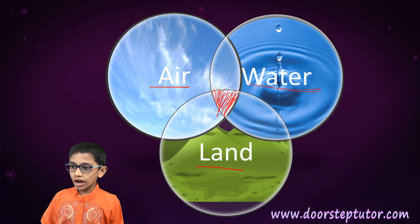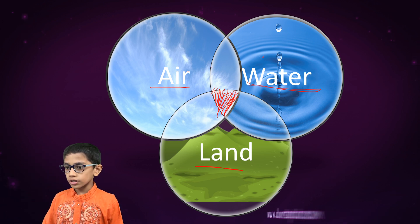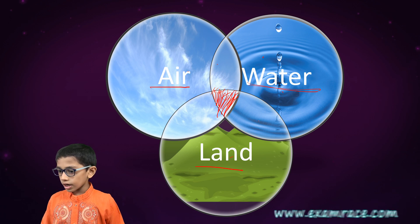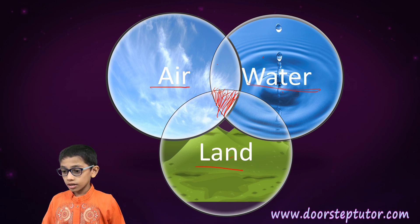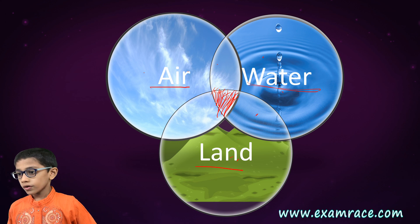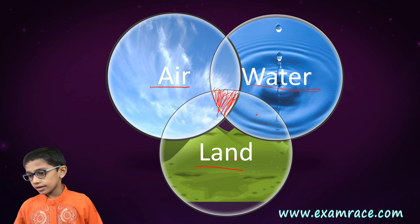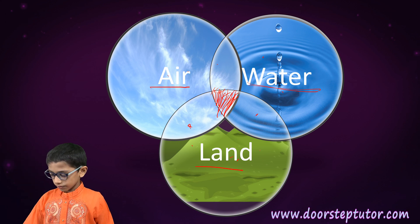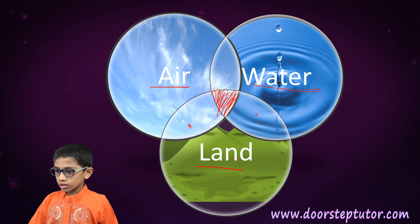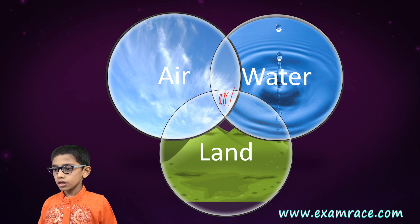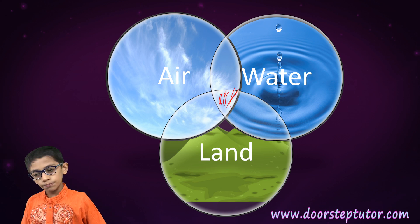If there is only air and water, there is no life. If there is only water and land, there is no life. If there is only air and land, there is no life. Life only exists where all three — atmosphere, hydrosphere, and lithosphere — come together.